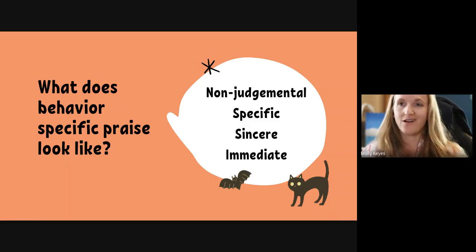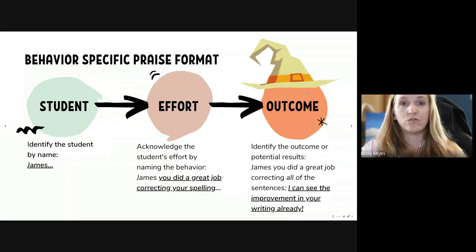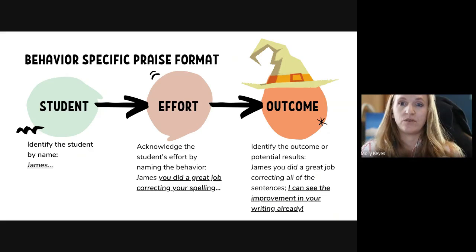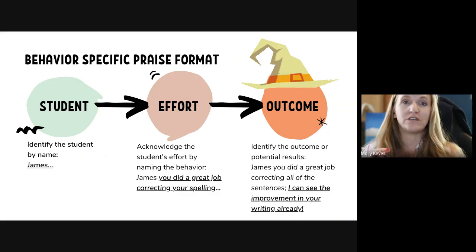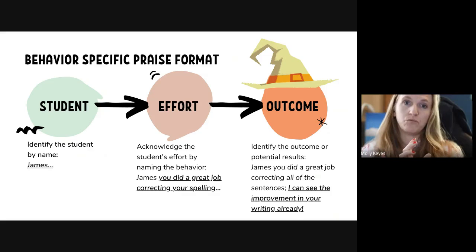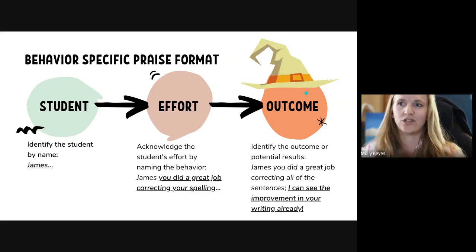Behavior-specific praise is a nonjudgmental, specific, sincere, and immediate form of feedback. Because it's not aimed toward a learning goal necessarily, it's really easy to pop out in front of your whole class. Behavior-specific praise follows a format of recognizing a student, recognizing the effort that was made, and then recognizing the outcome of that effort. For example — James, you did a great job correcting your spelling. I can see the improvement in your writing already. James' behavior was correcting his spelling, and as a result, his writing will improve. This is a very short-form feedback method that states who, what they did, and what will become of it. This helps students to see the cause and effect of their actions in positive ways.